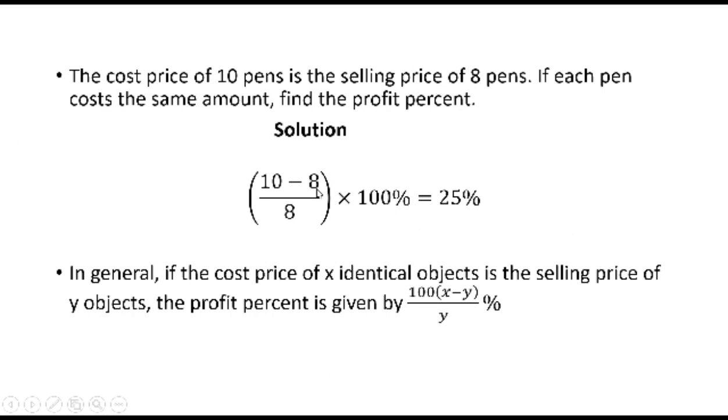You'll find that this is simply 10 minus 8, that on 8 times 100%, you have 25%. In general, if the cost price of x identical objects is the selling price of y objects, the profit percent is given by a fraction with numerator 100 multiplying the difference between x and y, that's x minus y, denominator y percent.